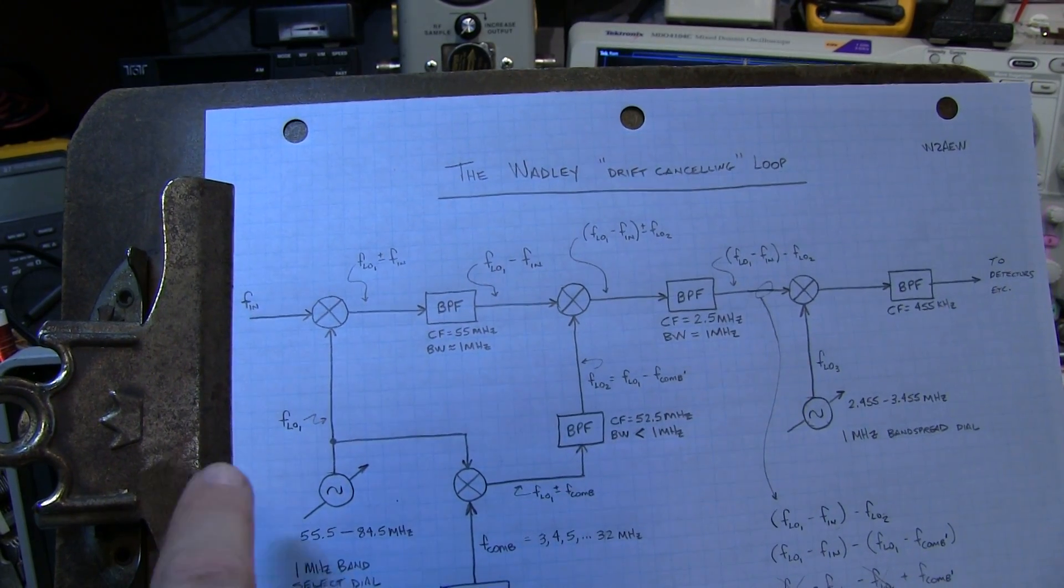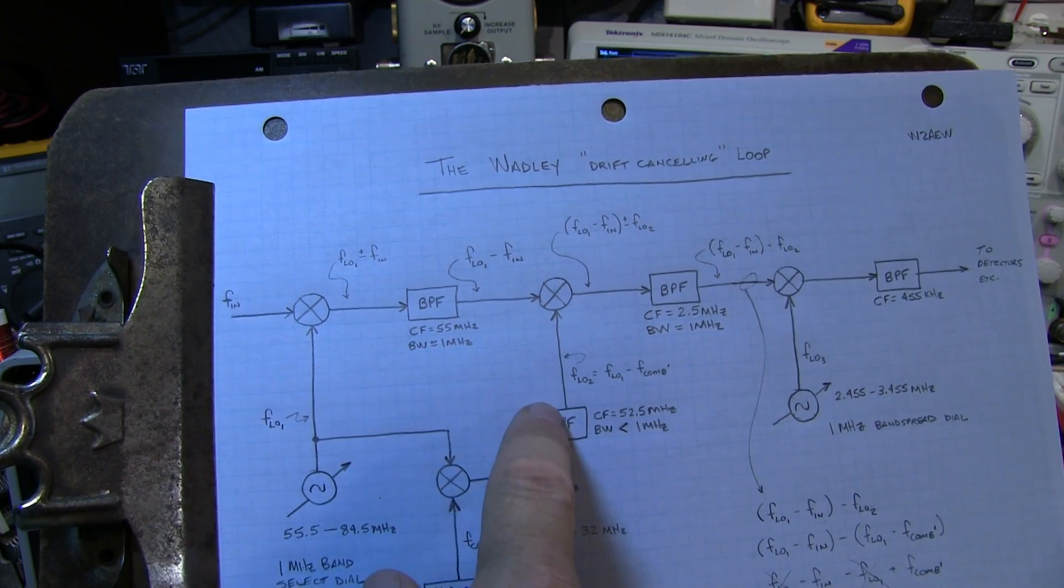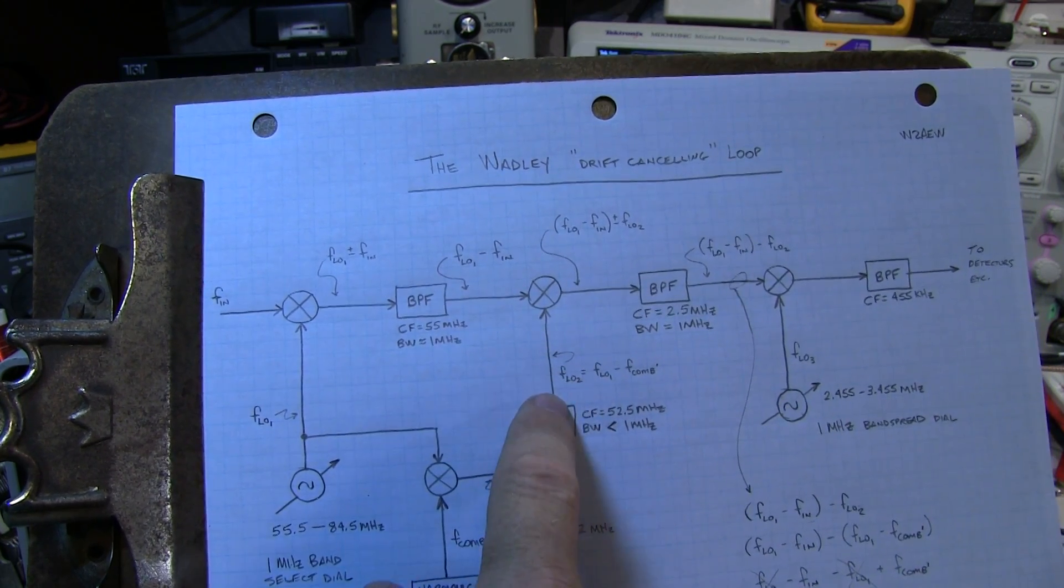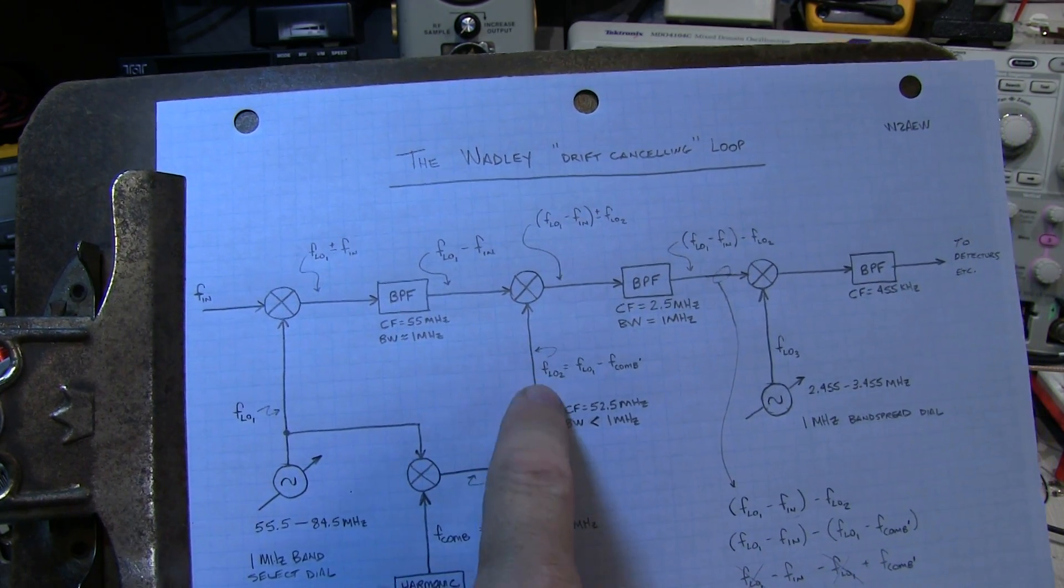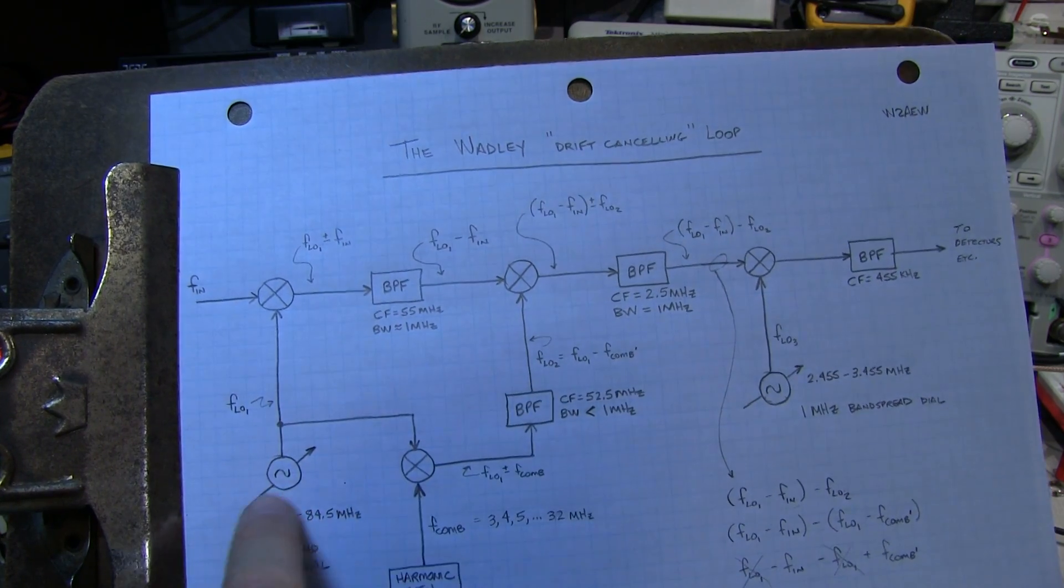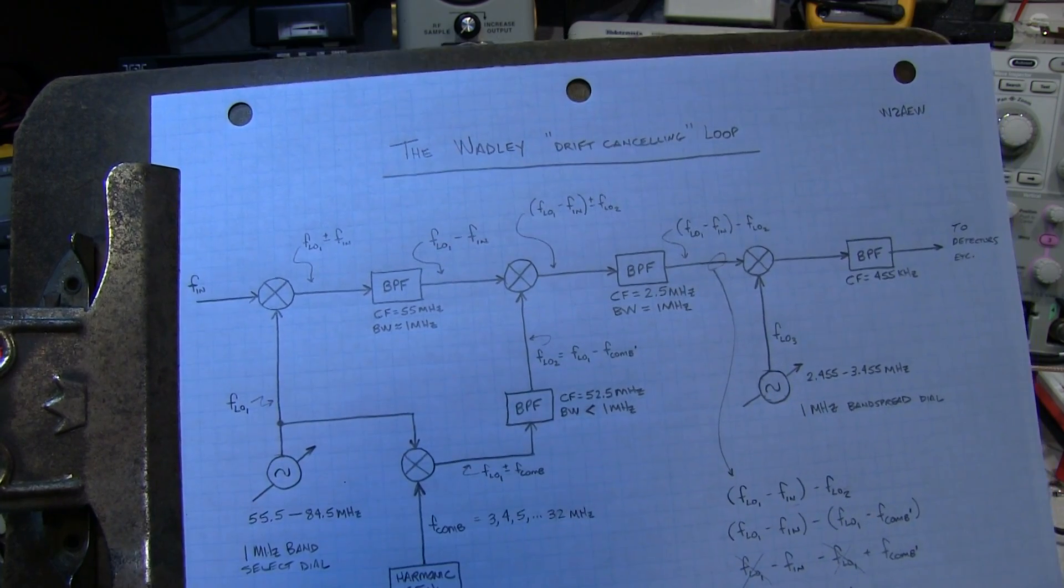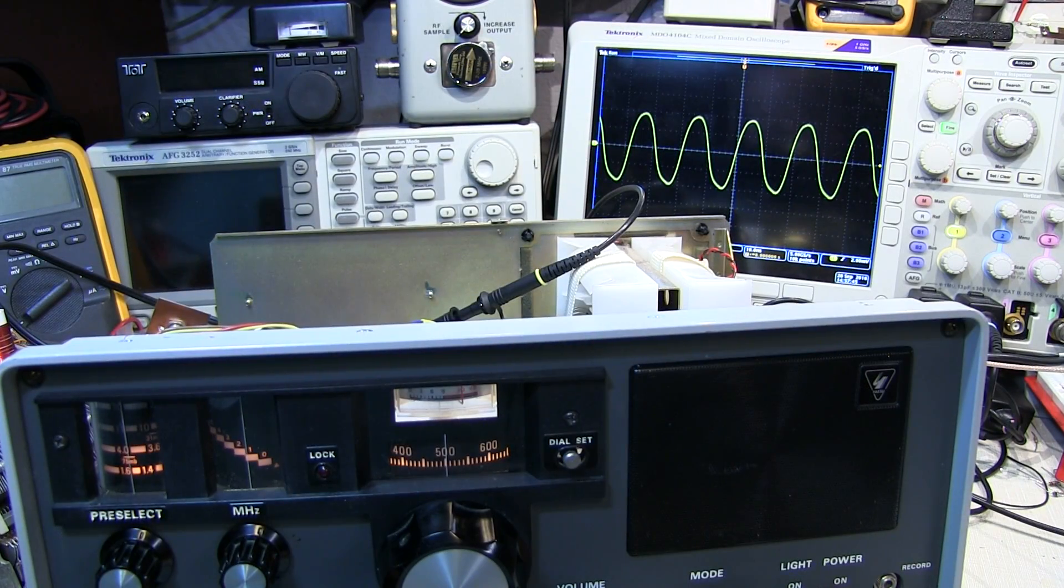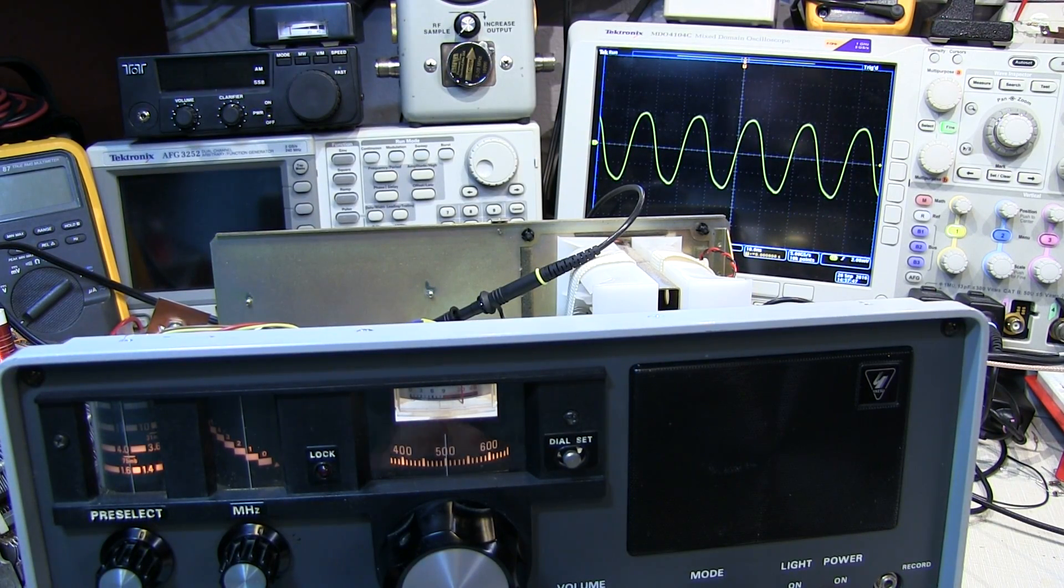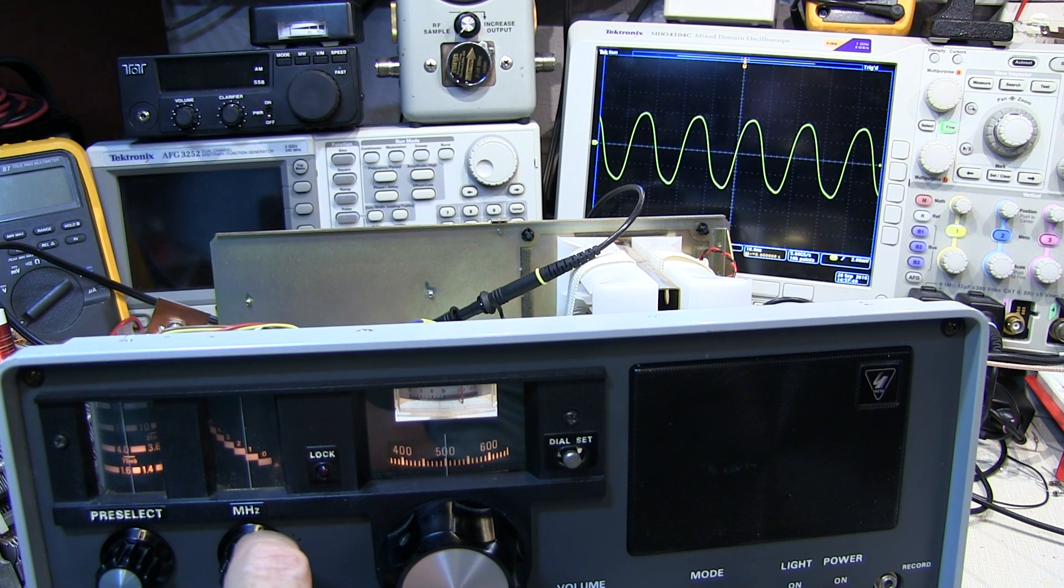Okay to get a visual idea of how this bandpass filter is used to select just a 52.5 MHz component as we tune the VFO across. Let's take a look at the output of that filter as we adjust the VFO.